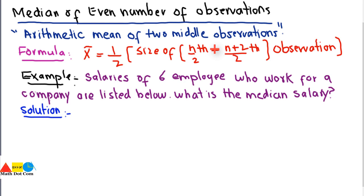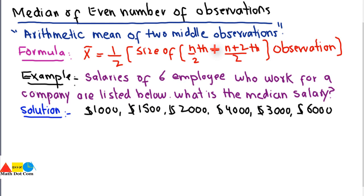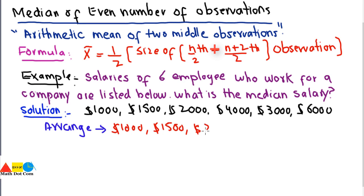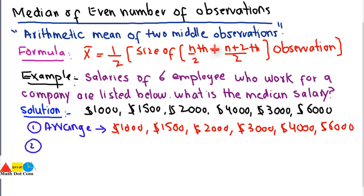The example: salaries of 6 employees at a company are given and we need to find the median salary. Step 1 — arrange from smallest to largest: $1000, $1500, $2000, $3000, $4000, $6000. Here n = 6, which is an even number of observations.